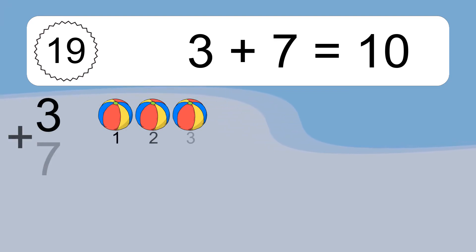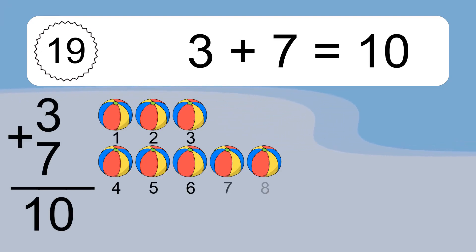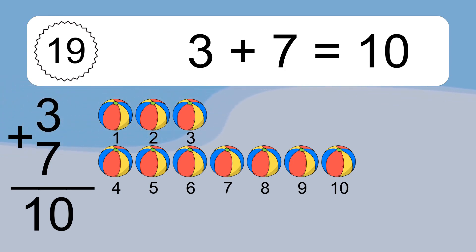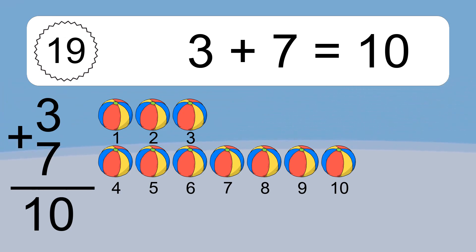3 plus 7 equals what? 3 plus 7 equals 10. Let's count it. 1, 2, 3, 4, 5, 6, 7, 8, 9, 10.